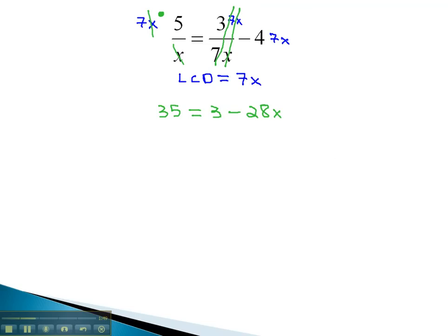We can now solve this problem for x, like always, by subtracting 3 to get 32 equals negative 28x, and then finally dividing both sides by negative 28 to get our solution. When we reduce, dividing by 4, we get negative 8 sevenths.